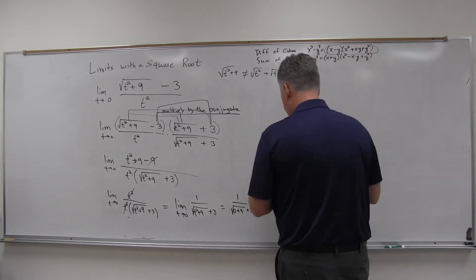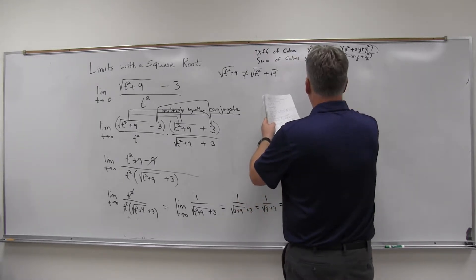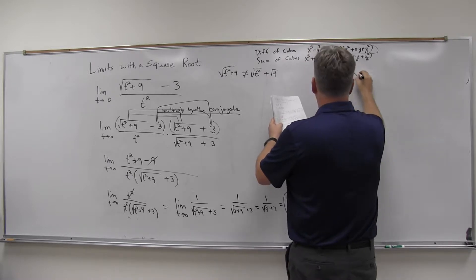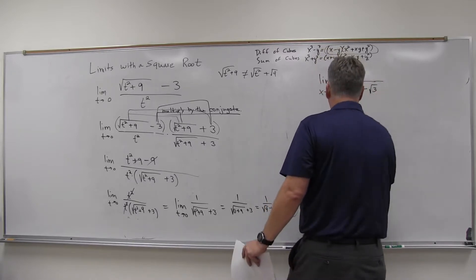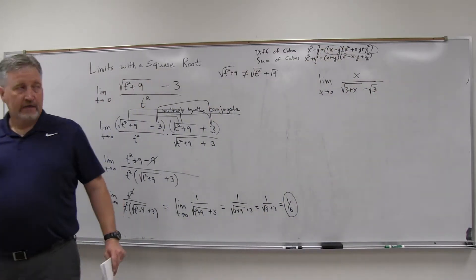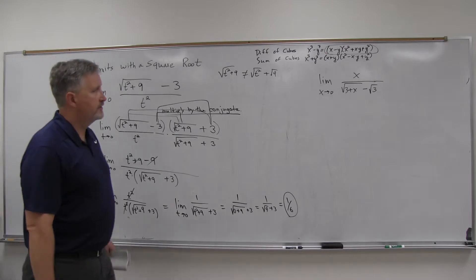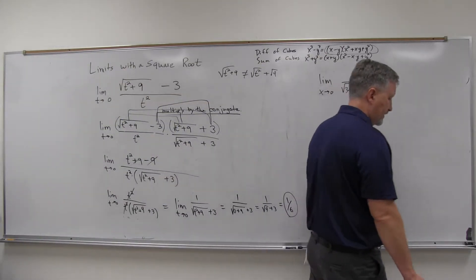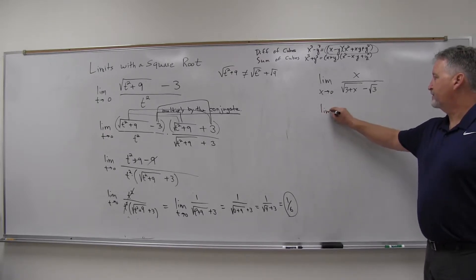What about this one? If I have the limit as x approaches zero of x over the square root of three plus x minus the square root of three. Well, it does the same thing as before — zero over zero. But we've got that square root, and in this case the square root stuff is in the denominator. We can still do the conjugate thing with that denominator.